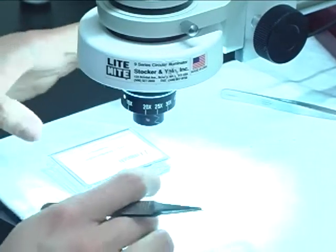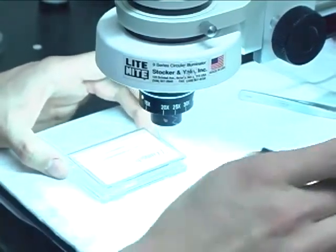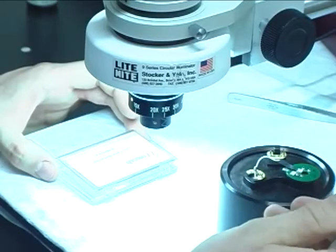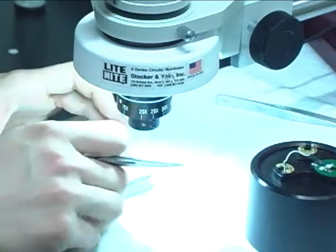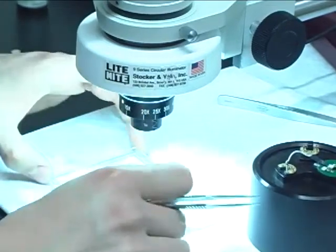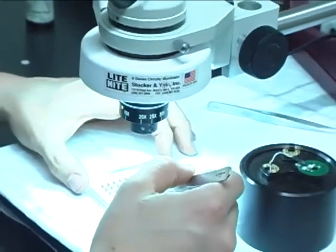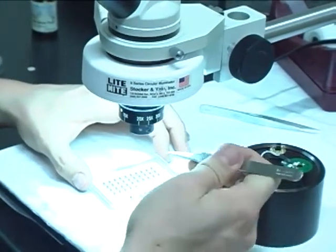Next we're going to prepare and mount our cantilever onto our mount for the instrument. So since these particular chips come with three individual cantilevers and we're doing electrical measurements, we must knock off two of the excess tips.